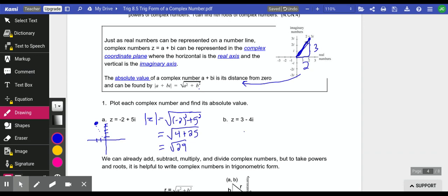For the next one, 3 minus 4i, we're going to go 3 in the real direction, and then down 4 for the imaginary, and there's our point.